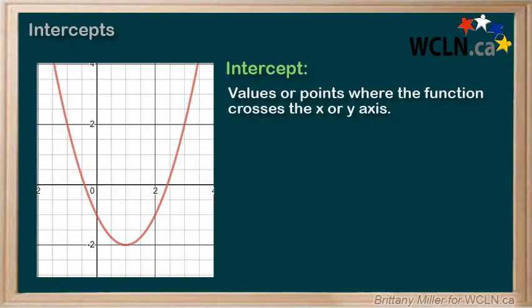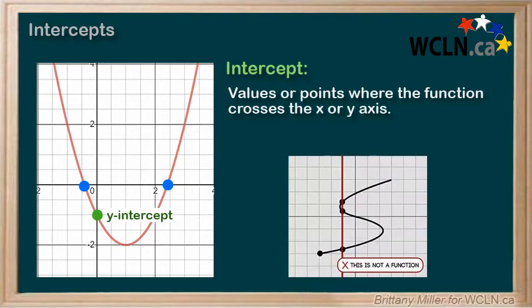Intercepts are the values where a function crosses the x- or y-axis. Y-intercepts are the value of y when x equals 0. There will only ever be one y-intercept, because something that can produce different results for the same input is not a function and would fail the vertical line test.